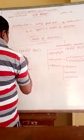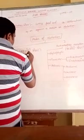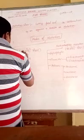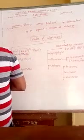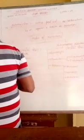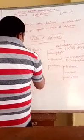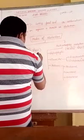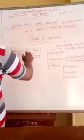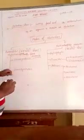So here we have to write that autotrophic organisms include green plants and some bacteria. These organisms are covered under autotrophic nutrition.